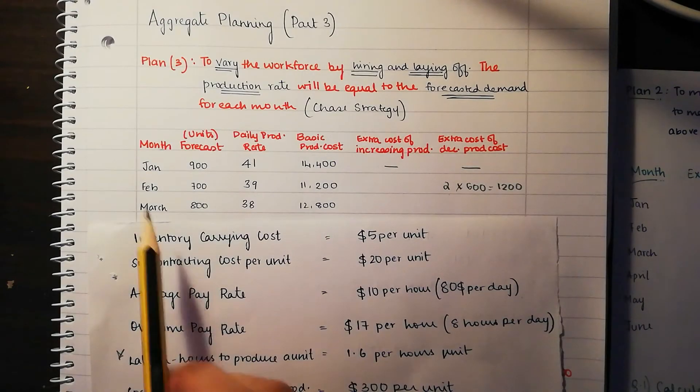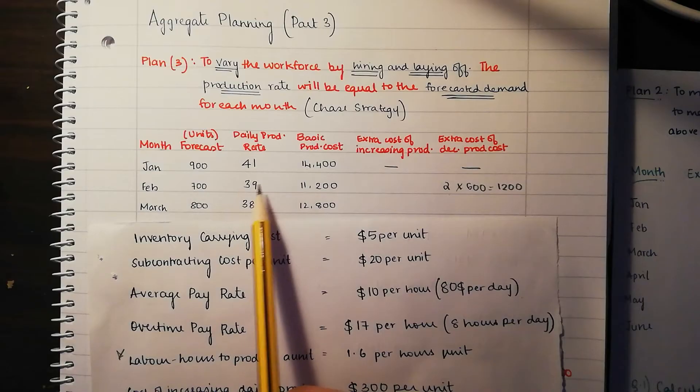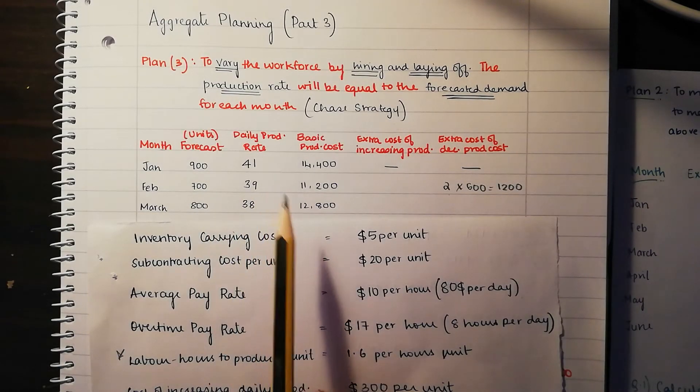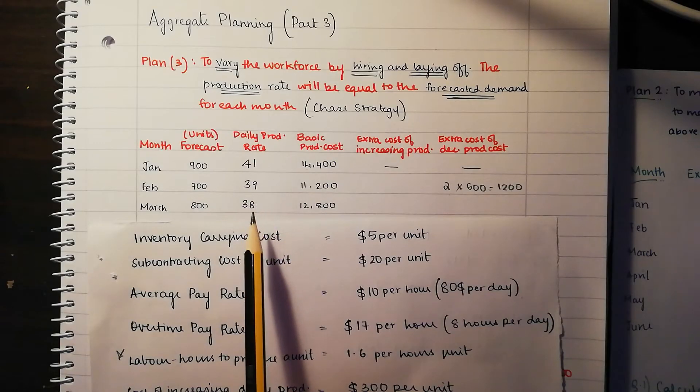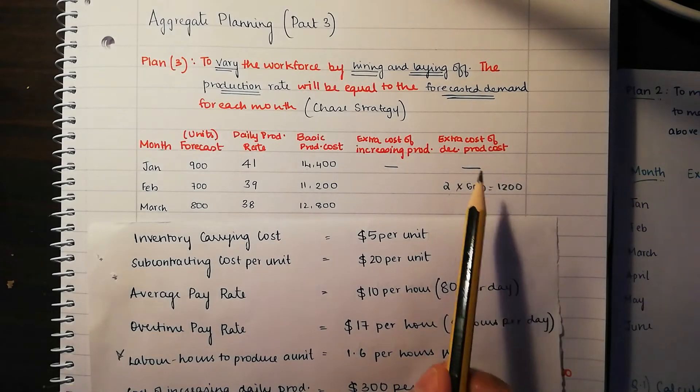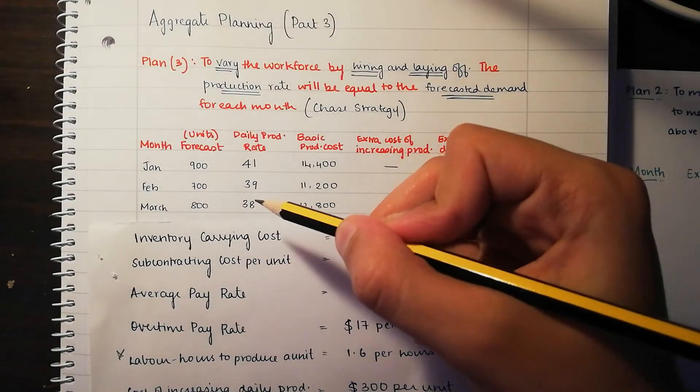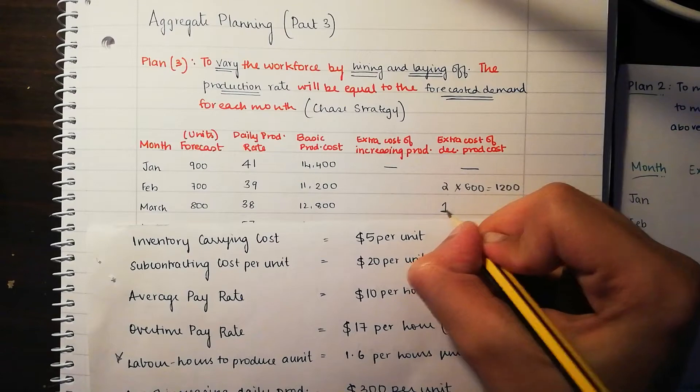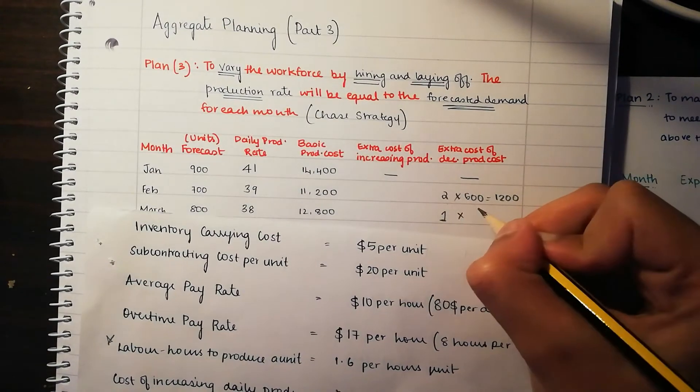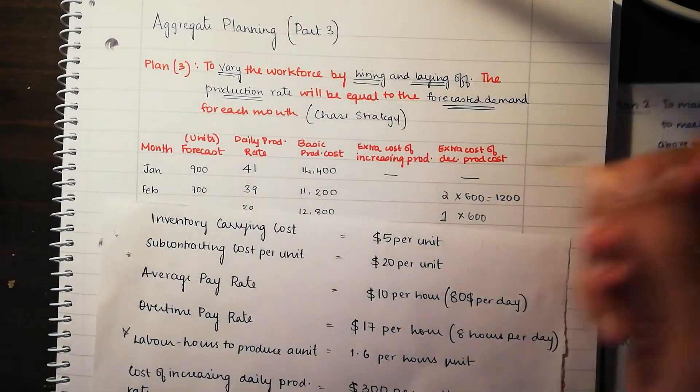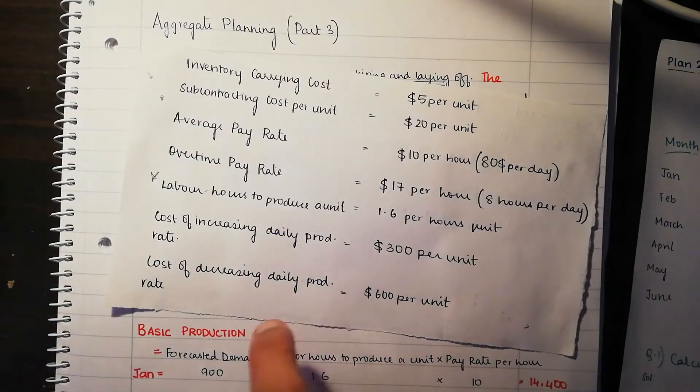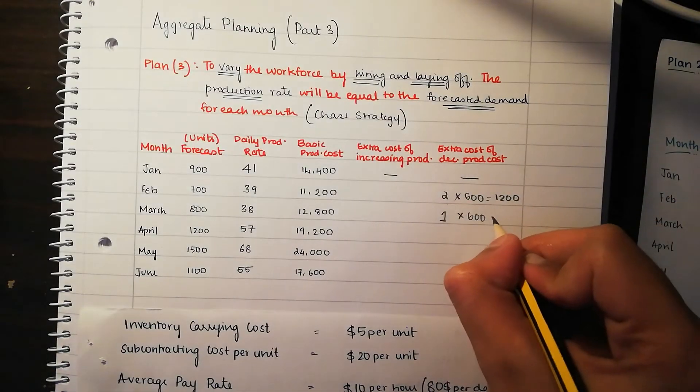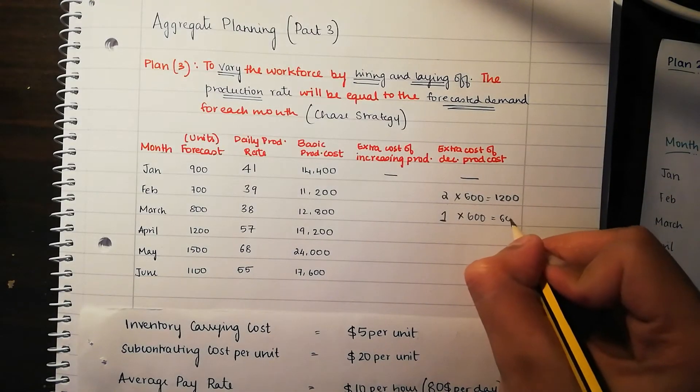Now let's go to March. What's happening in March? In Feb, we used to produce 39 and now in March, it has decreased to 38. So we can see that our production rate is decreasing by one unit. The cost of decreasing the production is going to be the difference between those two months. 39 minus 38, that's 1, 1 multiplied by 600 again because we are decreasing and the cost of decreasing the reproduction is going to be $600 per unit. So it's going to be 1 multiplied by 600, which is 600.